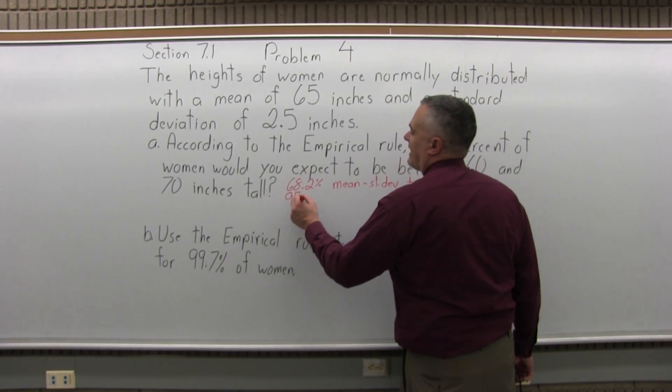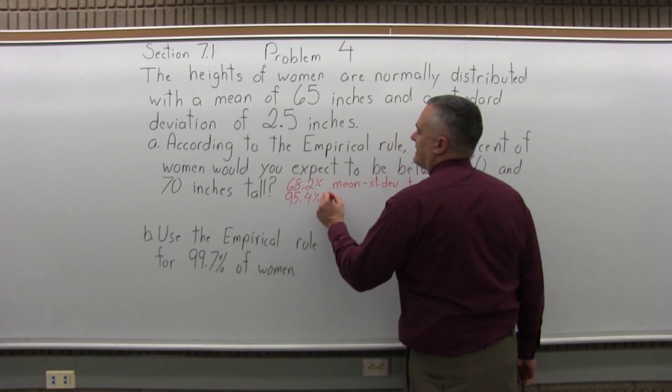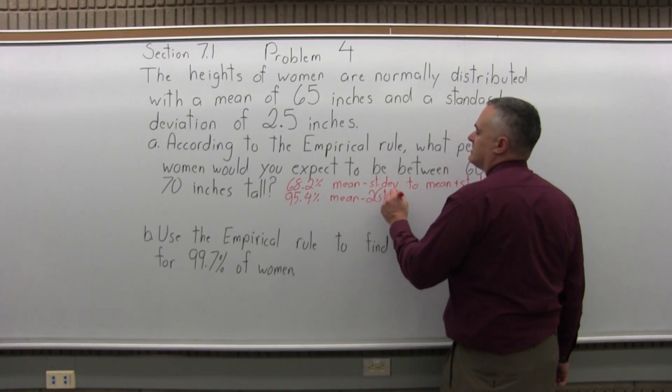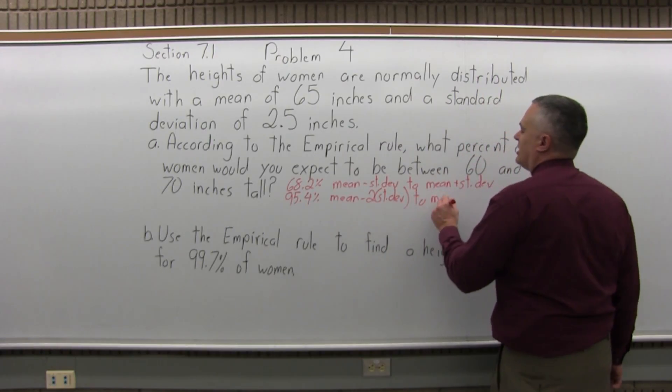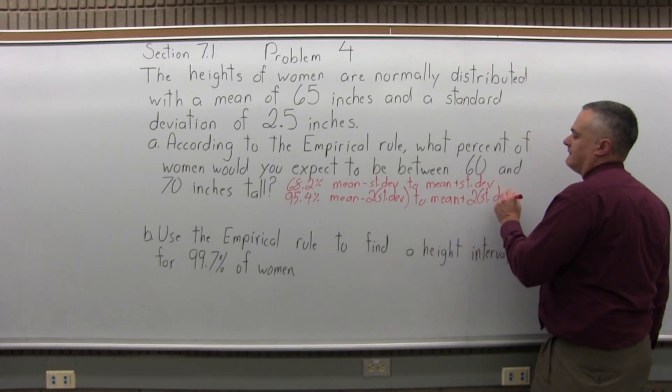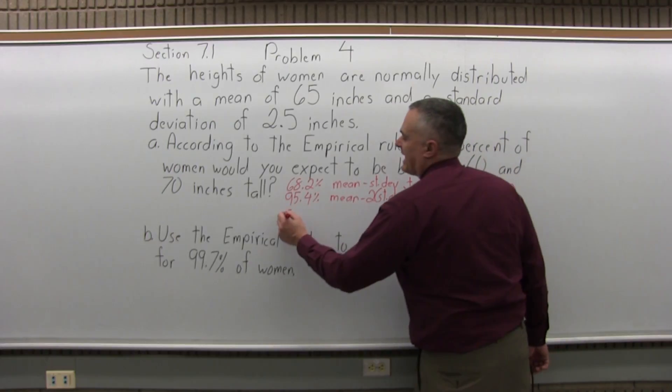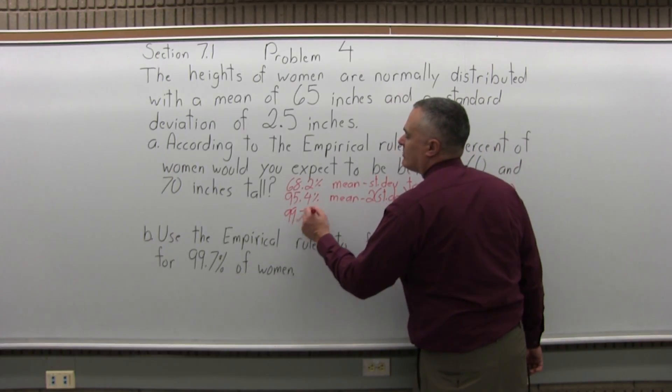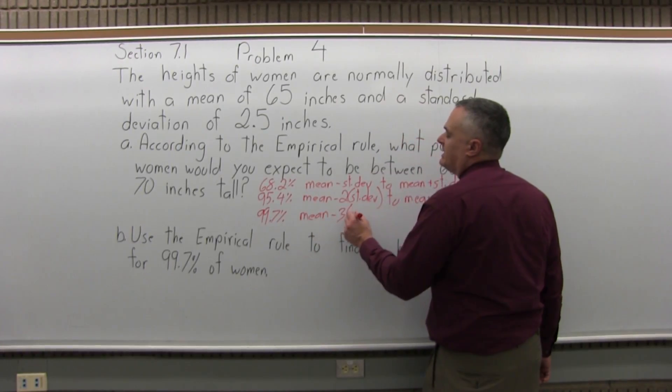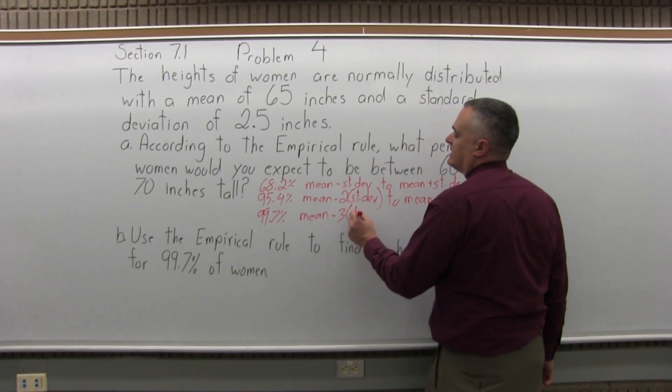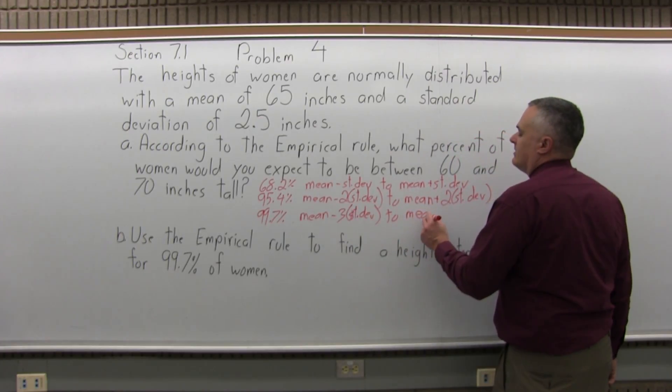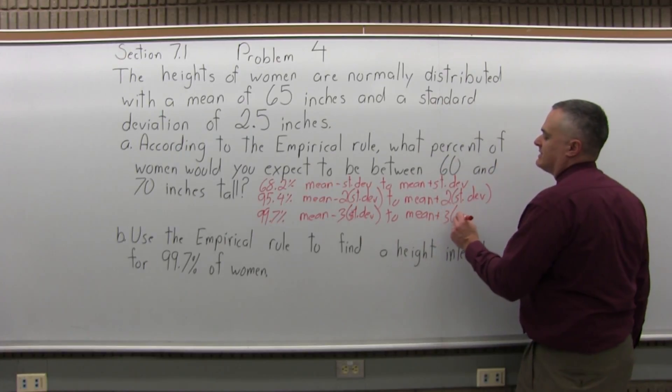And 95.4% of data is in the interval, the mean minus two standard deviations to the mean plus two standard deviations. And that 99.7% of data, virtually all of it, if it's normally distributed, is in the interval, the mean minus three times the standard deviation to the mean plus three times the standard deviation.